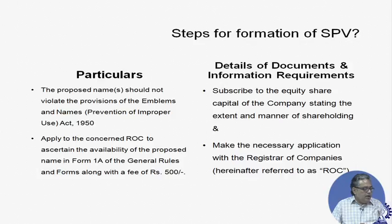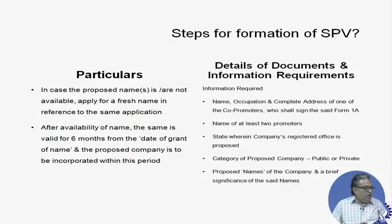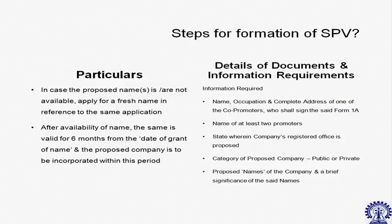You should apply to the ROC in Form 1A and generally pay a fee of five hundred rupees. This facility is now available online — you can go to the MCA21 website and check whether that particular name is available or not. You can also apply online for availability of a name. If you find that the name is not available, you should apply for a fresh name. After availability is confirmed, that name is valid for six months, so within six months you have to file all the registration documents with the ROC.